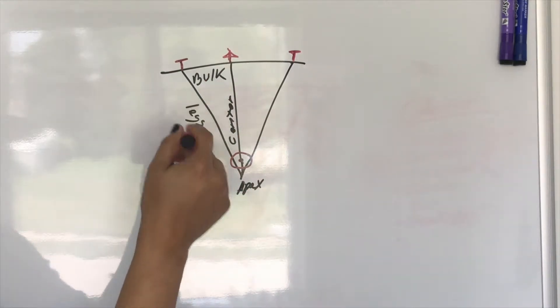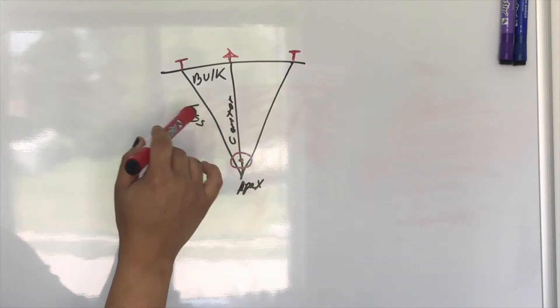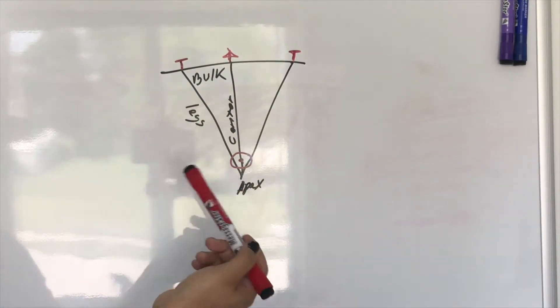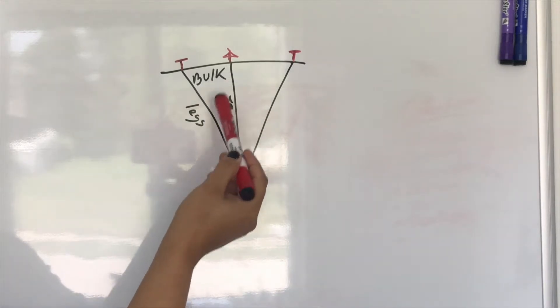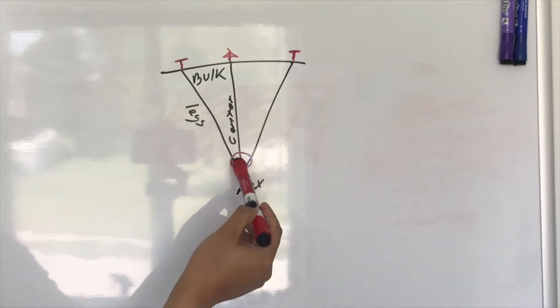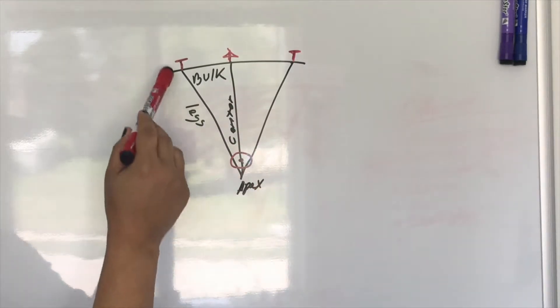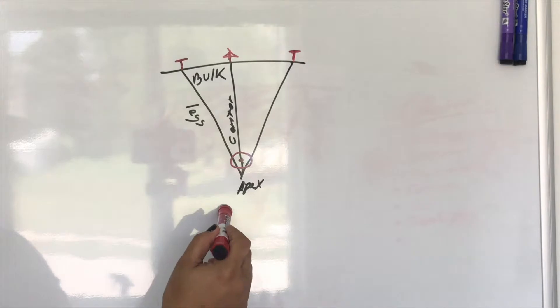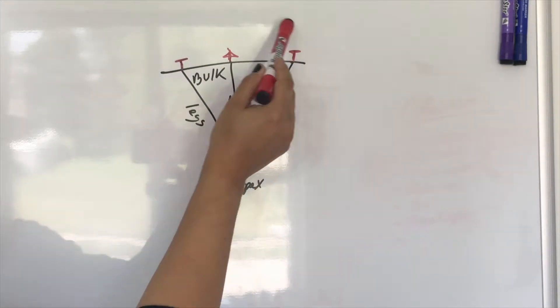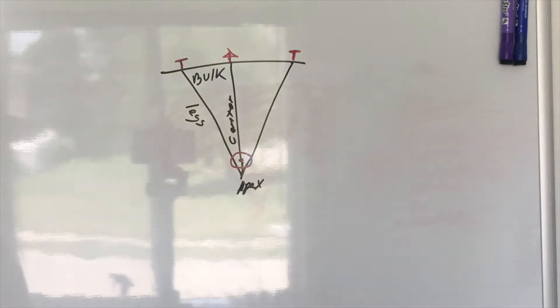Basically, this is the anatomy of a dart: the bulk, the center line, the legs, the apex, and the notches that you normally put on the dart.